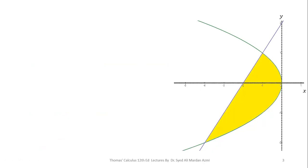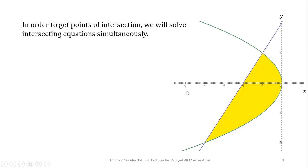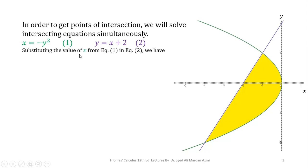Now, whenever you have to calculate the area for a given region, you must know the equations of the boundaries and the points of intersection. In the next step we will calculate these intersection points using the given equations, solving them simultaneously. We have equation (1): x = -y², and equation (2): y = x + 2.